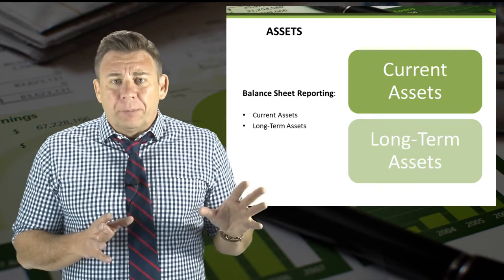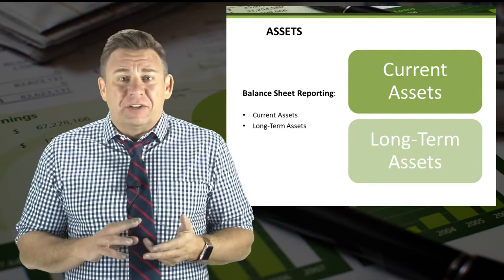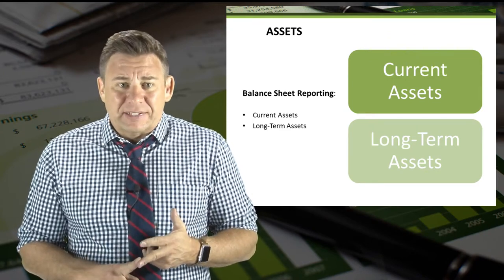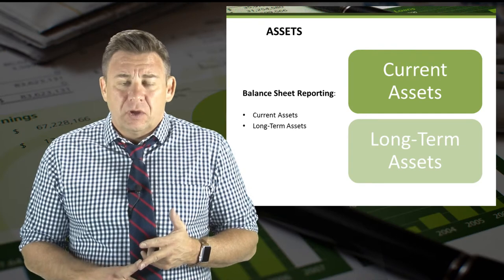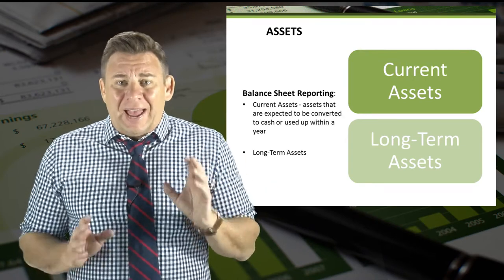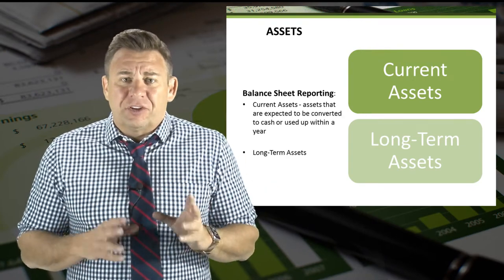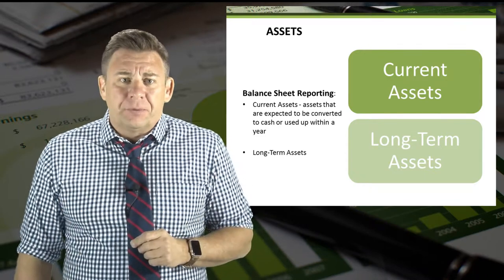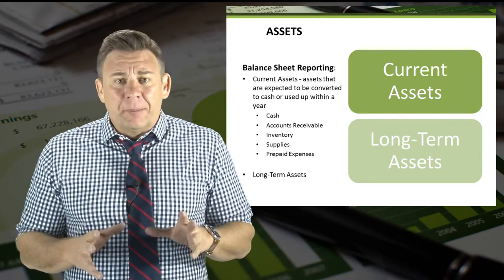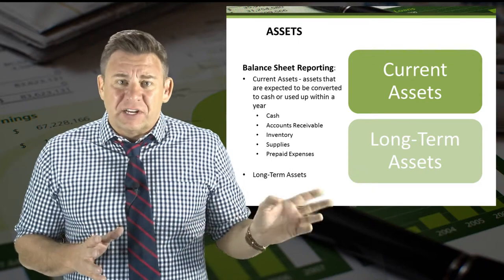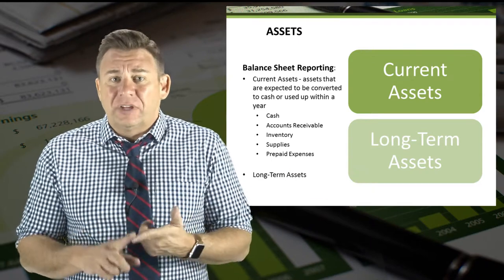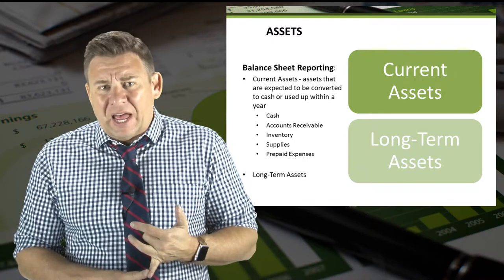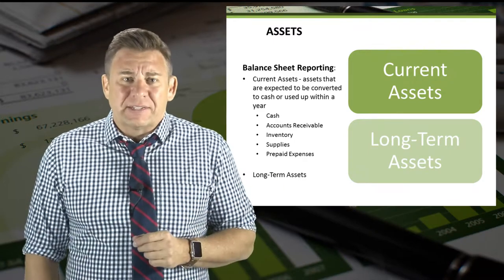Balance sheet reporting of assets classifies them into two categories: current assets and long-term assets. Current assets are assets that are expected to be converted to cash or used up within one year. Some common examples of current assets are listed on the slide and include cash, accounts receivable, inventory, supplies, and other prepaid expenses.